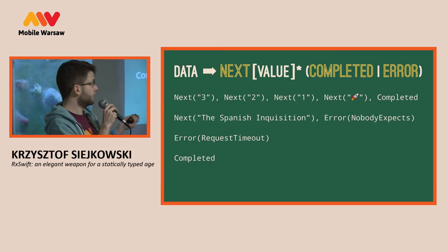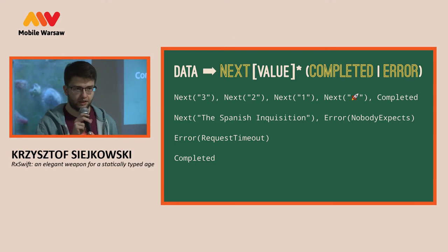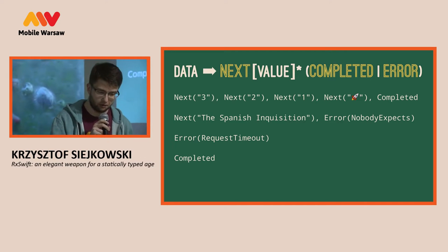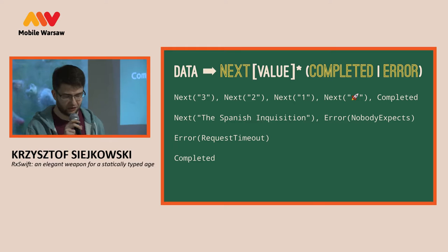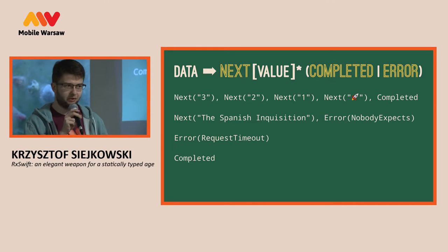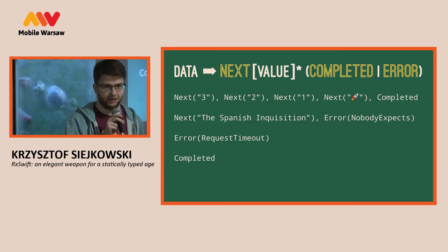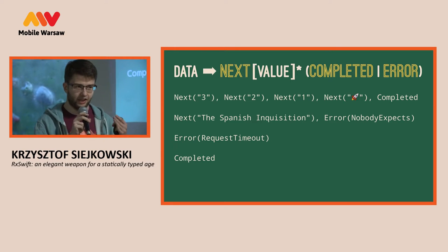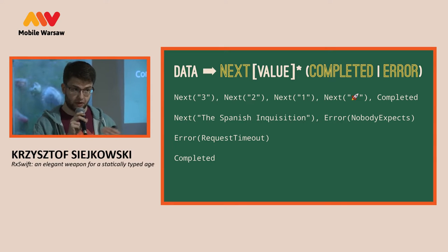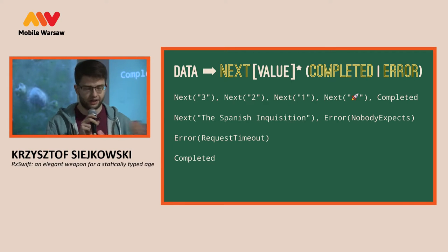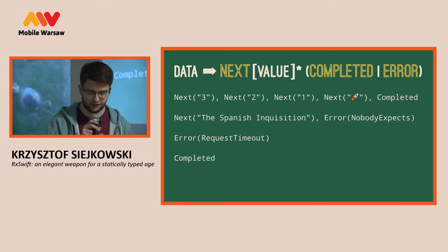Here are some samples of good event sequences for Observable. There might be some number of next events and then completed, or a number of next events and then an error, or just an error, or just completed. The important thing is after either an error or completed — after termination of the stream — nothing else is coming in terms of new events or any events.